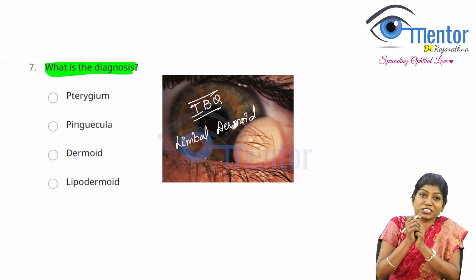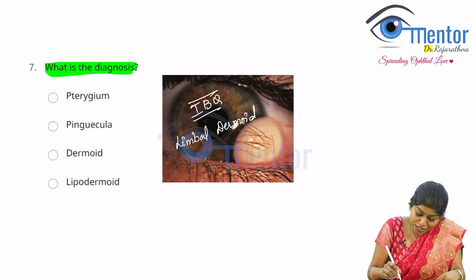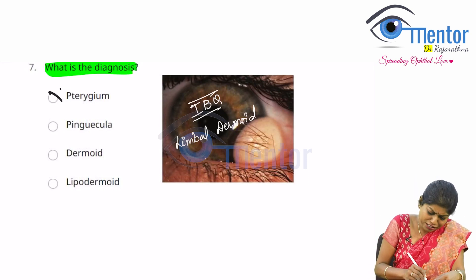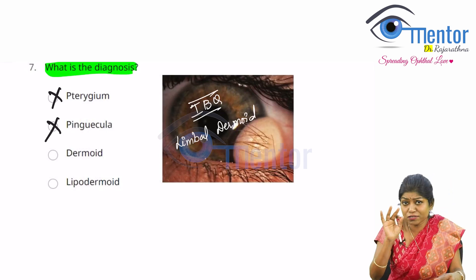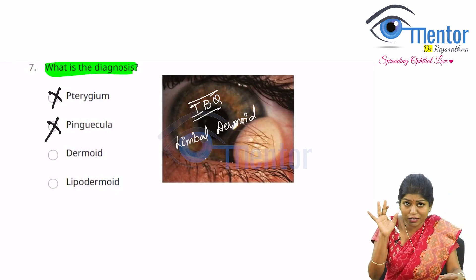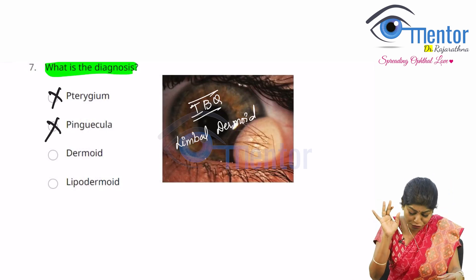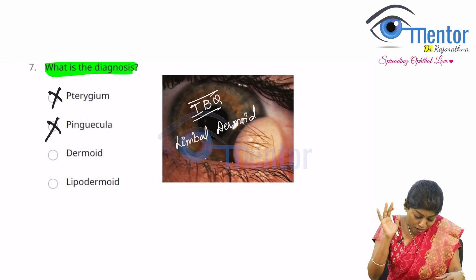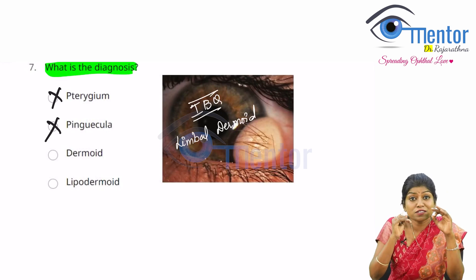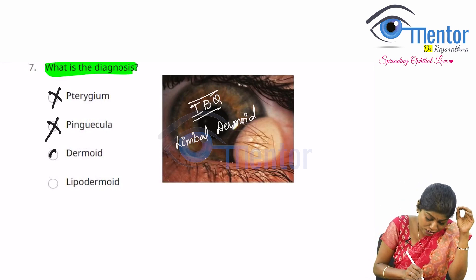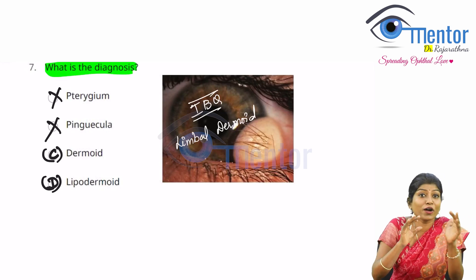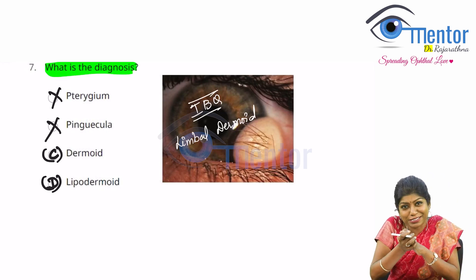Now look at the options. You can straight away rule out pterygium and pinguecula because this is not pterygium, this is not pinguecula. Now comes the difficult part: whether it is option C or option D — dermoid or lipodermoid.